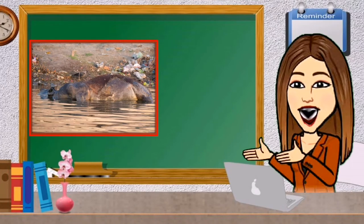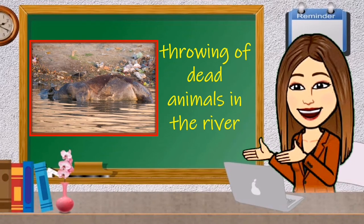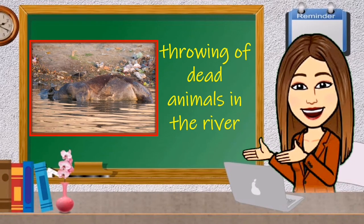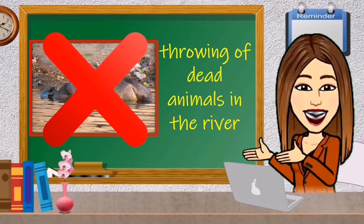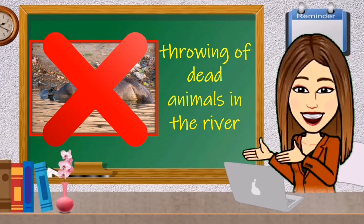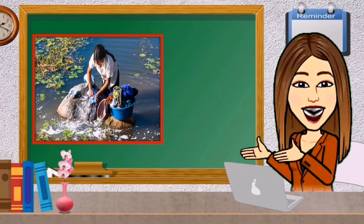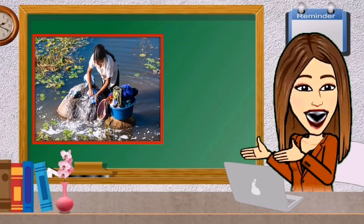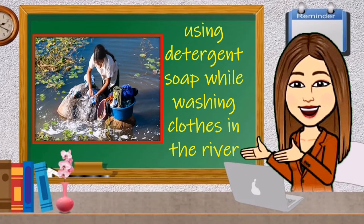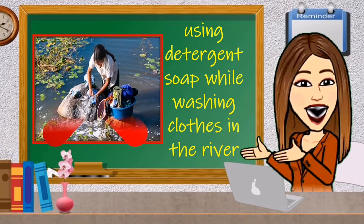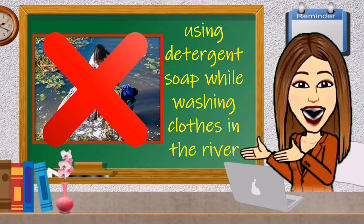Number 4: Throwing of dead animals in the river — is it useful or harmful to the environment? The correct answer is X. Throwing of dead animals in the river is harmful to the environment. Number 5: Using detergent soap while washing clothes in the river — is it useful or harmful to the environment? The correct answer is X. Using detergent soap while washing clothes in the river is harmful to the environment.